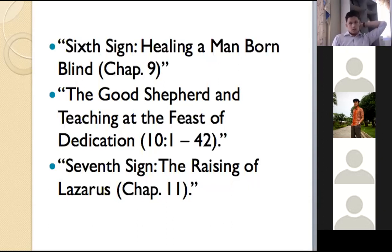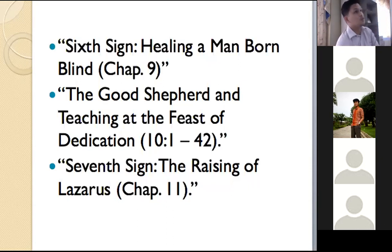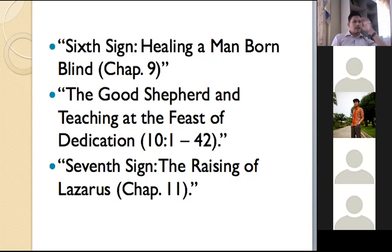Then the good shepherd teaching at the Feast of Dedication — in Hebrew called Hanukkah, the Festival of Lights. This was the celebration especially when the temple was rebuilt after they were exiled in Babylon, during the time of Judas Maccabeus. Chapters 11 and 12 serve as a transition from the book of signs to the book of glory. So you have the book of signs — the miracles of Jesus — and chapters 11 and 12 are a transition to the book of glory.